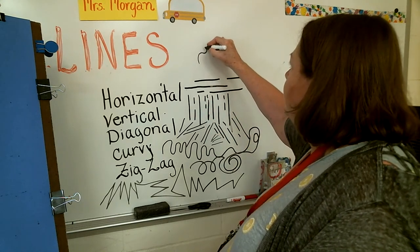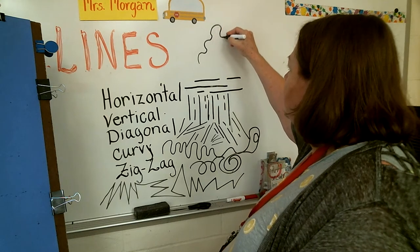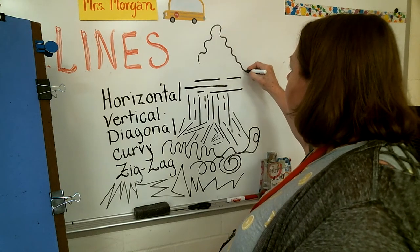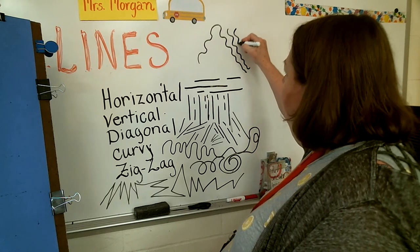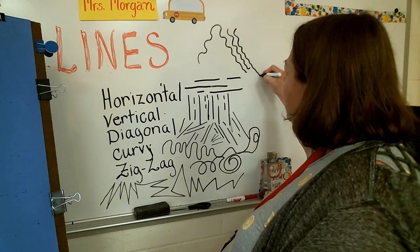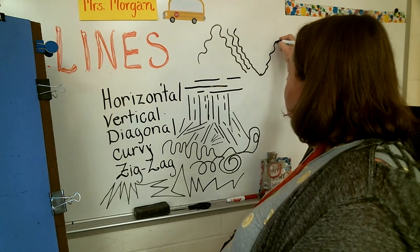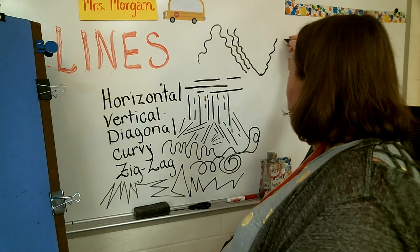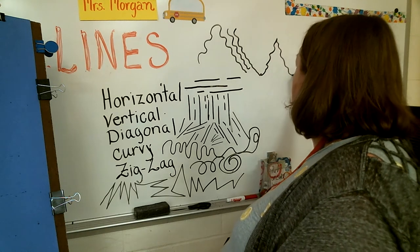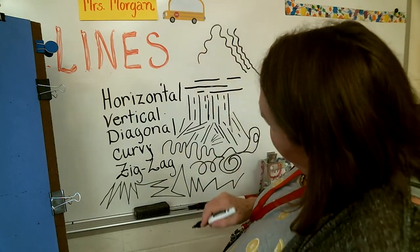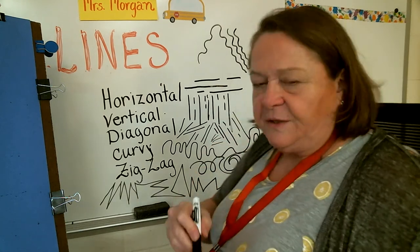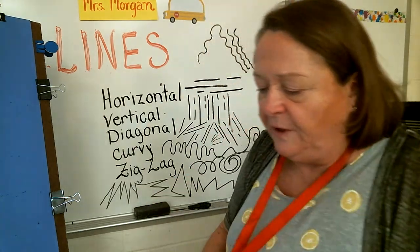Could you do diagonal curvy lines? Yes, you could. You could do diagonal curvy zigzag lines. Yes, you could do curvy zigzag lines. Okay, so basically there's five types of lines.